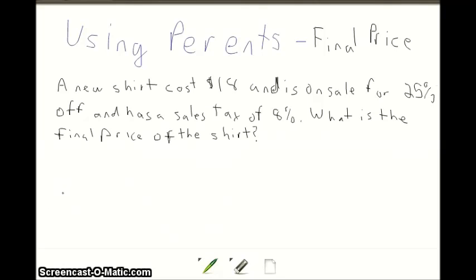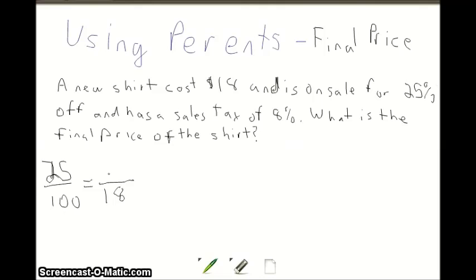Our first step is to find out how much the discount is. We have a 25% discount, so we set up the proportion: 25 over 100 equals x over 18. We do 25 times 18 first, which gets us 450, then we divide by 100.